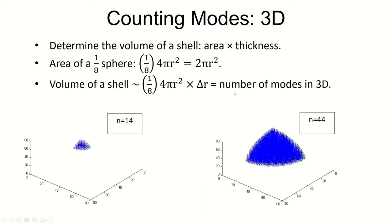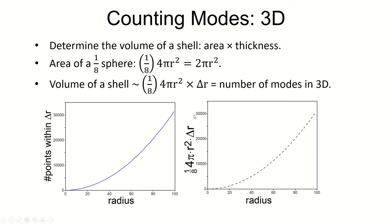In three dimensions, instead of area we use volume. The number of points within a volume of a spherical shell — rather than the area of a disc in 2D — gives the number of modes. This works out quite well as shown in the graphic. The number of modes is proportional to the volume of that shell in N-space.